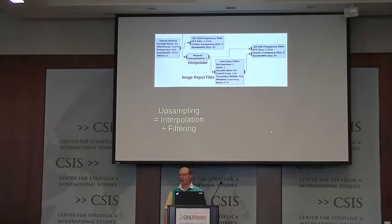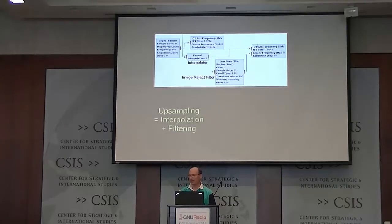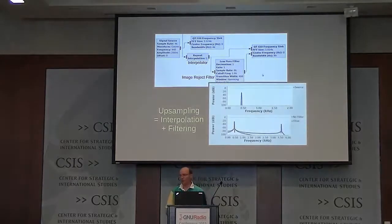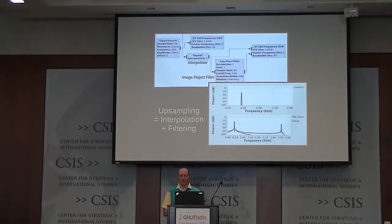The same thing happens when you upsample. I'm taking a 440 Hz input wave and upsampling — this repeat block takes each sample and repeats it twice, doubling the sampling rate from 4 kHz to 8 kHz. If I take one path directly into the frequency sink and another path through a low-pass filter, you see a similar thing. On the unfiltered path, there's an extra unwanted spike at 3.5 kHz. So both with upsampling and with downsampling, you don't just decimate or repeat — you have to filter to get the correct answer.